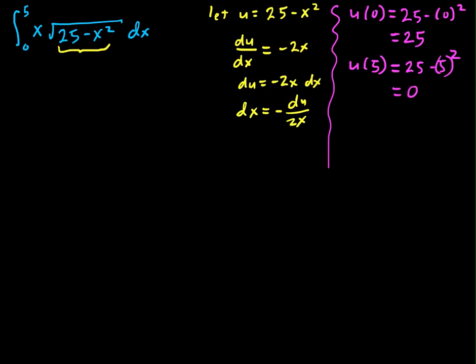And so when I rewrite this, when I go into u world, I'm going to use these limits. So this will be equal to the integral from 25 to 0 of x times the square root of u, and dx equals negative du over 2x. Now if you don't like doing this to the limits, I'll briefly show at the end how you can avoid that. But let's do some work here. The x's cancel out.